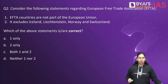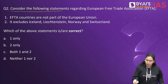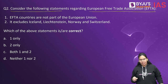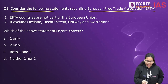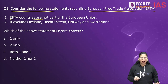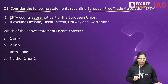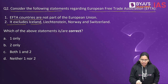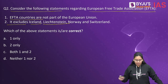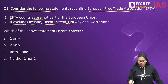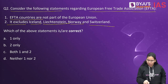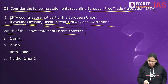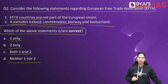Moving towards our second question. Consider the following statements regarding the European Free Trade Association, EFTA. First statement: EFTA countries are not part of the European Union. Second statement: it excludes Iceland, Liechtenstein, Norway, and Switzerland. Which of the above statements is or are correct — first only, second only, both one and two, or neither one nor two?